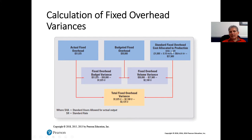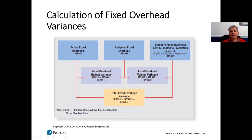Breaking it down into the three-column format as we did for direct materials, direct labor, and variable overhead: the actual fixed overhead was $31,025, the budgeted was $30,000 — difference of $1,025 unfavorable. The budget of $30,000 compared to the standard fixed overhead allowed of $27,900 gives $2,100 unfavorable. Because both variances are unfavorable, we add them together for an overall unfavorable fixed overhead variance of $3,125.